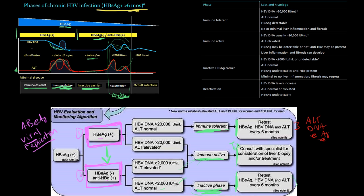One final thing: you can rarely have occult hepatitis B infections. In these situations, you may not actually find a surface antigen — that's why it's called occult. If you have someone with undiagnosed liver cirrhosis or unexplained elevated liver enzymes, it's possible they may have this occult hepatitis B virus infection where the surface antigen is not detectable but something is still going on.